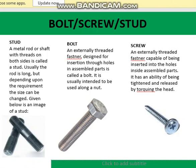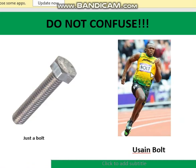Stud, bolt and screw. The difference can be seen even from the picture. A stud is a metal rod or shaft with threads — it's open from both sides. The bolt is closed from one side and open from the other. An externally threaded fastener designed for insertion into holes in an assembled pair is called a bolt. A screw is also an externally threaded fastener capable of being inserted into holes inside assembled parts, with the ability of being tightened and released by torquing the head.